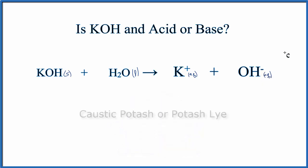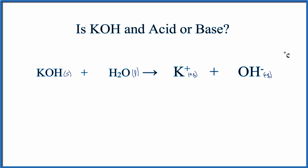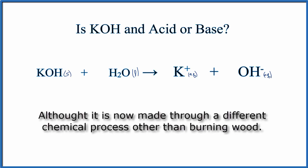KOH is also called caustic potash, or potash lye, and you can make it by burning wood. You dissolve the ashes in water, filter off the liquid solution, and when you let the water evaporate, you'll be left with KOH crystals. This potassium hydroxide is often used in making very soft soaps or liquid soaps, and is a pretty important industrial chemical.